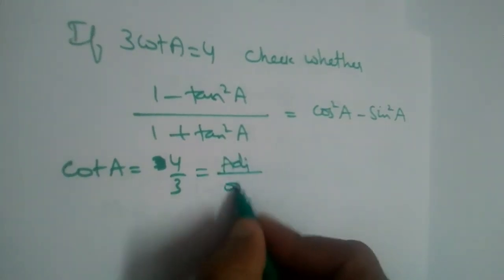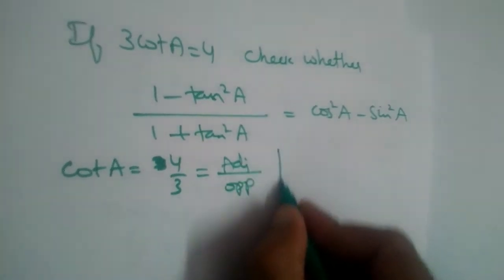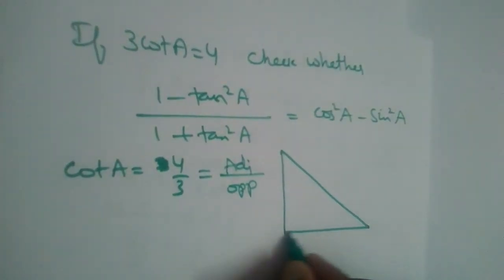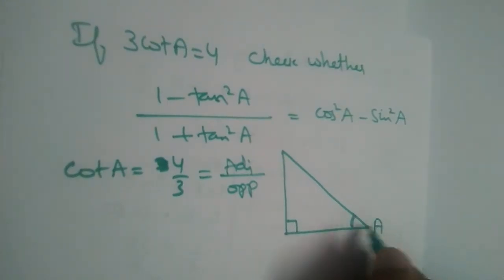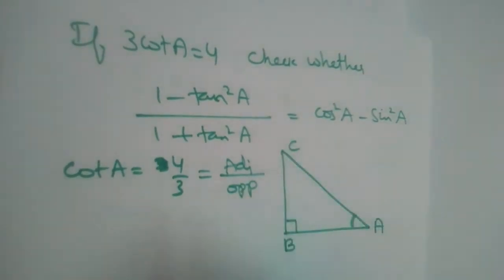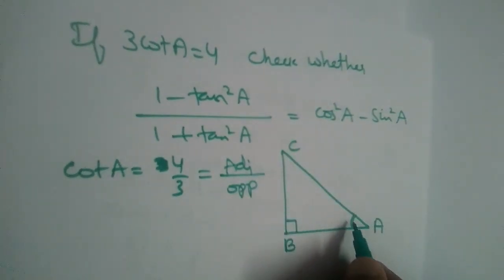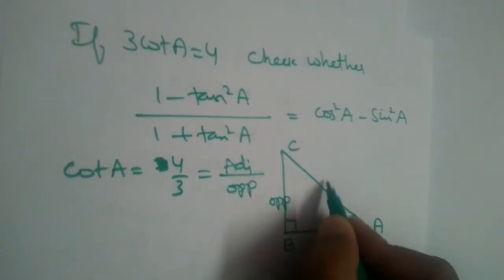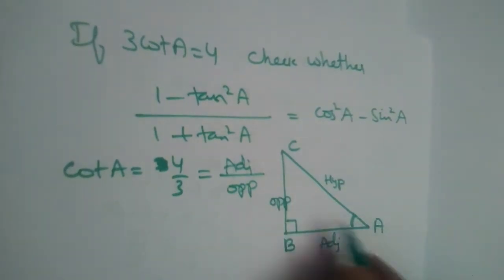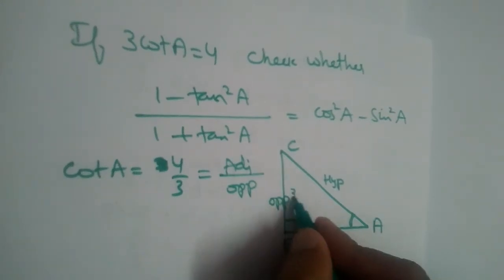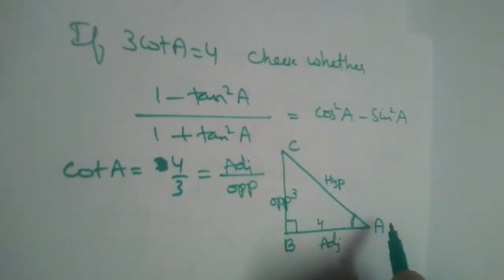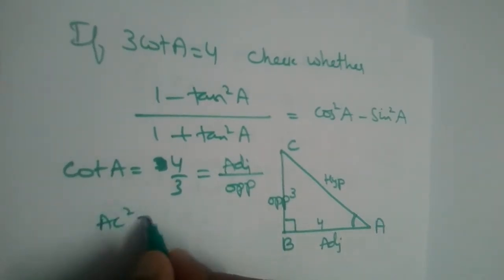Cot is adjacent over opposite. Let us draw a right-angle triangle with 90 degrees. Let angle A be at vertex A, with B and C as the other vertices. Adjacent to A is AB, opposite is BC, and AC is the hypotenuse. So adjacent is 4 and opposite is 3.